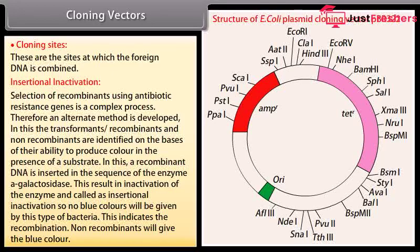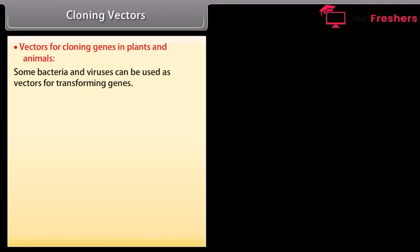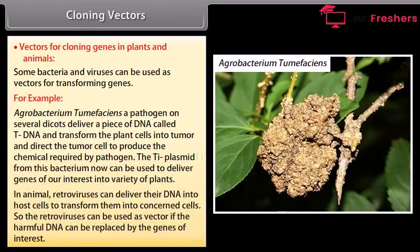Non-recombinants will give the blue color. Vectors for cloning genes in plants and animals. Some bacteria and viruses can be used as vectors for transforming genes. For example, Agrobacterium tumefaciens, a pathogen on several dicots, delivers a piece of DNA called T-DNA and transforms the plant cells into tumor, directing the tumor cell to produce the chemicals required by the pathogen. The Ti plasmid from this bacterium can now be used to deliver genes of our interest into a variety of plants. In animals, retroviruses can deliver their DNA into host cells to transform them. The retroviruses can be used as vectors if the harmful DNA is replaced by the genes of interest.